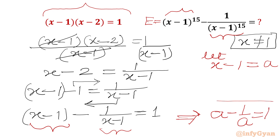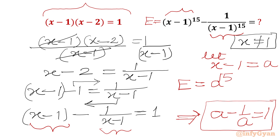This is our known equation: A minus 1 over A equals 1. And the expression we are evaluating becomes A to the power 15 minus 1 over A to the power 15. Let us start solving this.